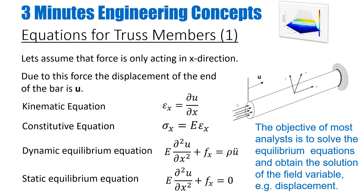Just a recap of what we have done until now. We are familiar with the equations for the truss member — it's a 1D structure. We are familiar with its kinematic equation which relates displacements with strains, the constitutive equation which relates strain with stresses, and how to define equilibrium equations for the truss element in dynamics and statics. The objective of most FE analysis is to solve the equilibrium equations, which are differential equations, and obtain the solution of the field variable — in this case, displacements.